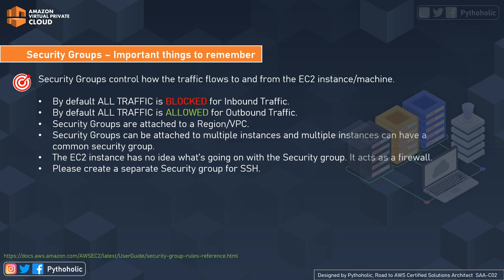Security groups are attached to a region and VPC. Security groups can be attached to multiple instances, and multiple instances can share a common security group — you can create one security group and assign it to multiple instances. EC2 instances have no direct awareness of the security groups; it acts as a virtual firewall externally. EC2 instance-level security is maintained through security groups without placing anything within the instance itself. You should always create a separate security group for SSH.